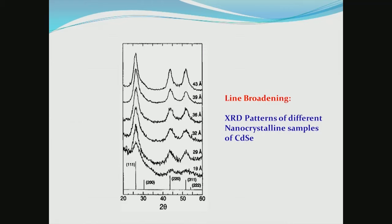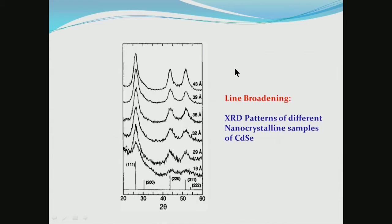This line broadening is illustrated with cadmium selenide — an important semiconductor from which quantum dots are made, as described in an earlier session. When cadmium selenide is prepared with different average crystal sizes, the XRD pattern becomes sharper and sharper. At the low end, where crystal size is only 19 angstroms (about 2 nm), the peaks are very broad; as particle size approaches 50 angstroms (5 nm), the peaks become considerably sharper. This illustrates the broadening of XRD peaks due to crystal size.